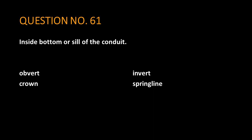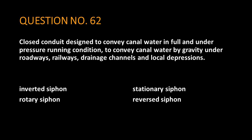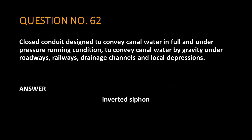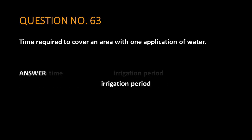Question number 61: inside bottom or sill of the conduit. The answer is: invert. Question number 62: closed conduit designed to convey canal water in full and under pressure running condition, to convey canal water by gravity under roadways, railways, drainage channels and local depressions. The answer is: inverted siphon. Question number 63: time required to cover an area with one application of water. The answer is: irrigation period.